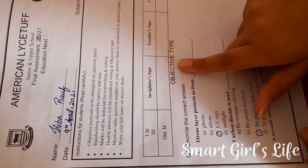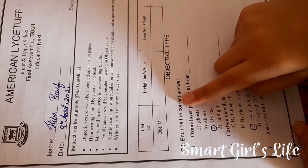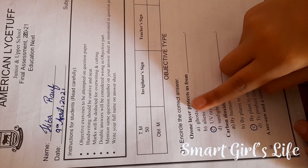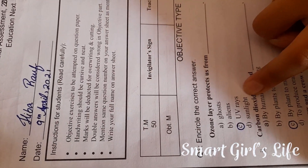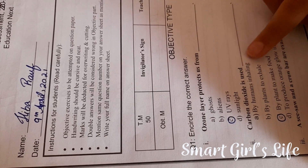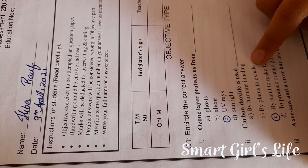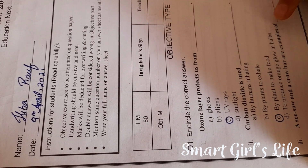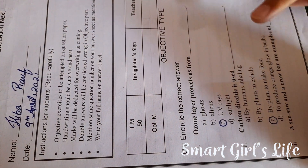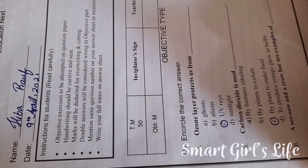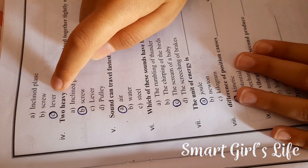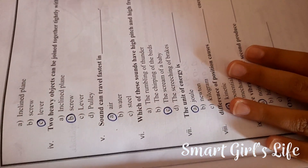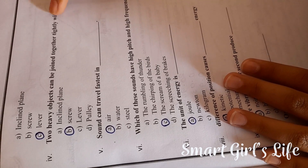Question number one of objective type: encircle the correct answer. Number one — ozone layer protects us from UV rays. Number two — carbon dioxide is used by plants to make food. To produce an orange glowing bulb, it is a system. Inclined plane, screw, or lever — it is lever.